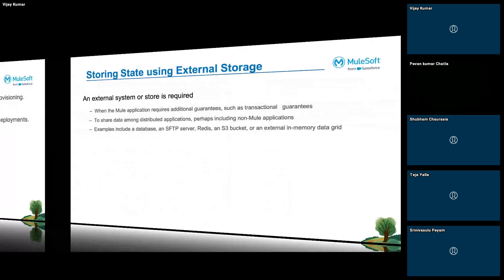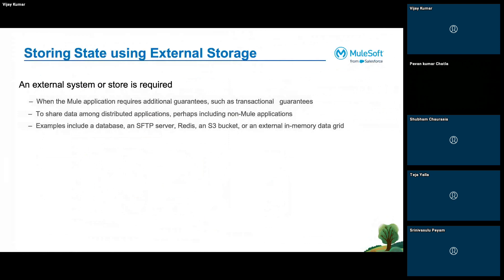And lastly, external storage, which is the general way we use it. Whenever we need additional guarantees — transactional guarantees, resilience, and performance — we use external storage which includes databases, different servers, S3, and external in-memory data grids, which can be used to store state and share across different applications. We generally use this when we have to share state with different non-Mule applications as well.